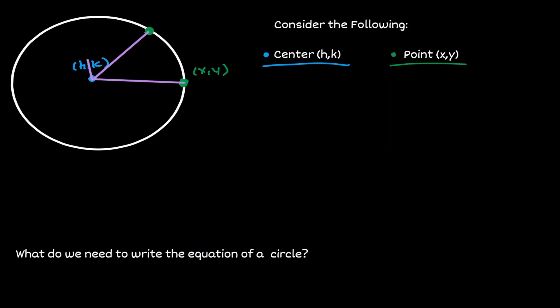Regardless of whichever point we choose, one thing that remains constant is that the value of the radius never changes. So we can think of the circle as a collection of points that are equidistant from the center of the circle.